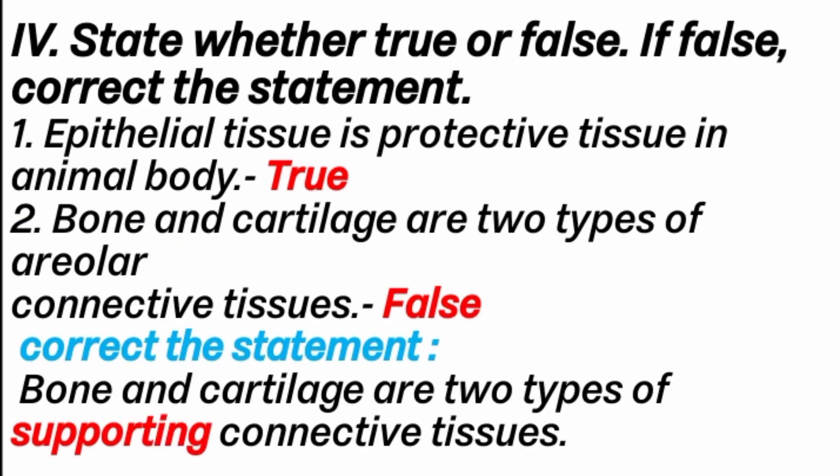Fourth section: State whether true or false. First question: Epithelial tissue is protective tissue in the animal body. Answer is true. Second question: Bone and cartilage are two types of areolar connective tissue. Answer is false. Correct statement: Bone and cartilage are two types of supportive connective tissue.